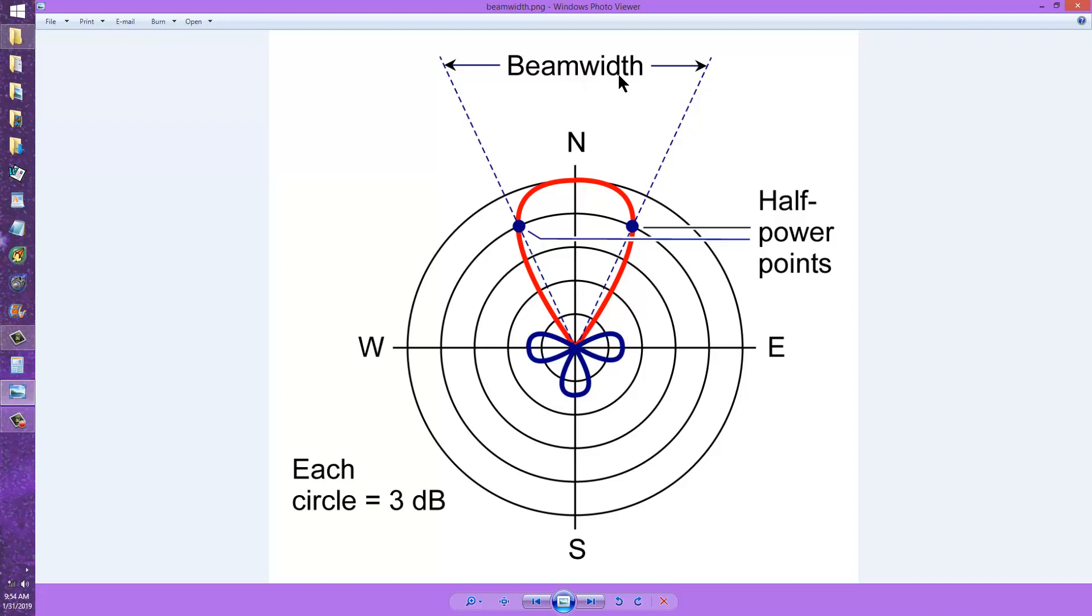The beam width is the angle between the half power points of the main lobe in the antenna, and the main lobe is the geometric picture of what the strongest signal zone looks like from such an antenna.